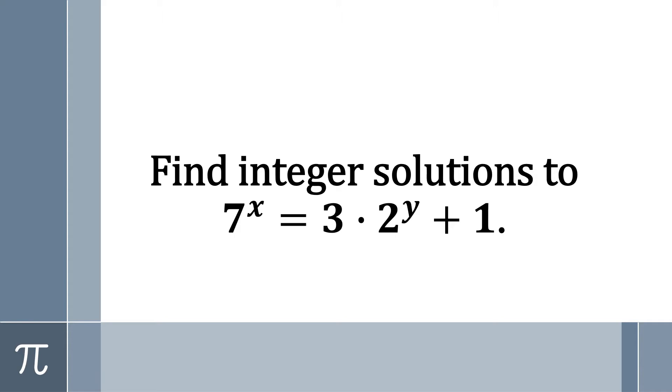Here comes a question. Find all integer solutions to the following equation: 7 to the x power equals 3 times 2 to the y power plus 1.